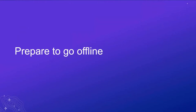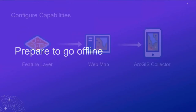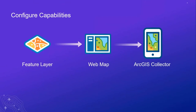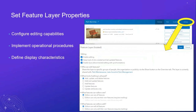Now let's prepare to go offline. As some of you are new to ArcGIS Collector, I want to cover the configuration capabilities. Most capabilities in Collector are configured within the feature layer properties and web map properties — it's a combination of both. Within the feature layer properties, you're setting editing permissions, indicating which features staff can add, update, or delete. For instance, if you have a fixed asset like a building, you probably don't want staff moving its location — they'd only be able to update attributes.